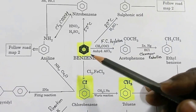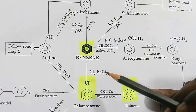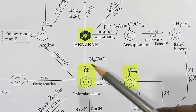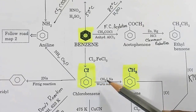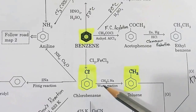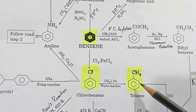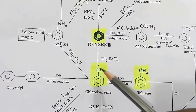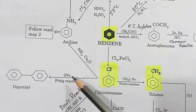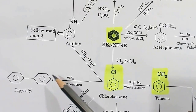Benzene can be treated with Cl2 in presence of FeCl3 to get chlorobenzene. Chlorobenzene, when treated with methyl iodide in sodium and ether medium, undergoes the Wurtz-Fittig reaction and you get toluene. If two moles of chlorobenzene are allowed to react with sodium, via the Fittig reaction, you get diphenyl.